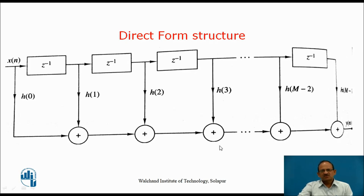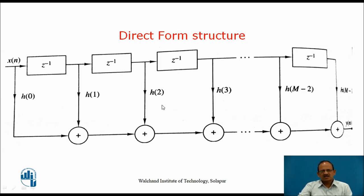This can be shown by a structure. Starting with x(n), passing through delay elements gives x(n-1), x(n-2), x(n-3), and so on. As per the equation, the outputs are h(0)*x(n), h(1)*x(n-1), h(2)*x(n-2), h(3)*x(n-3), and so on. Adding all these terms gives y(n). This is the direct form structure for an FIR system.